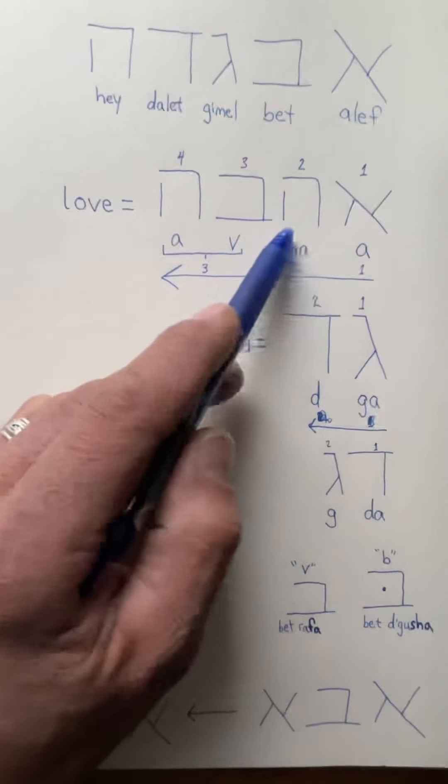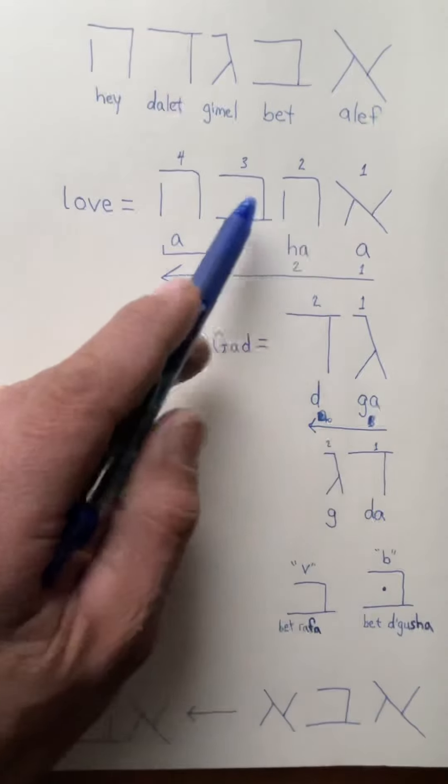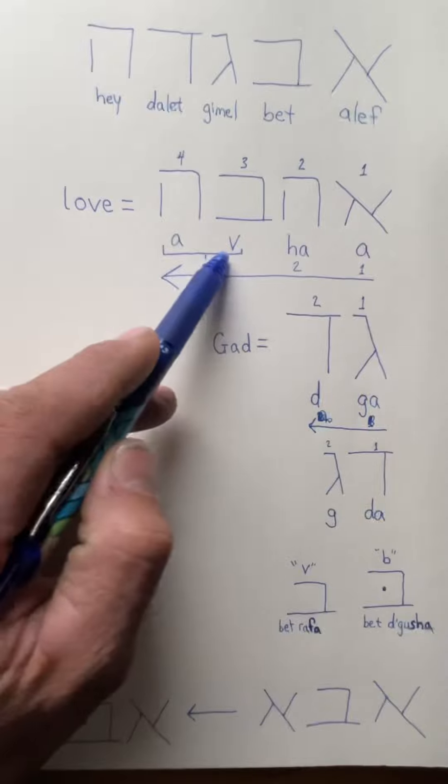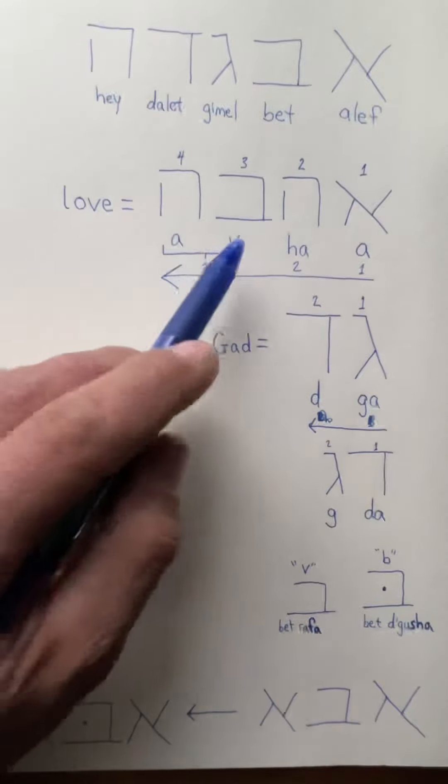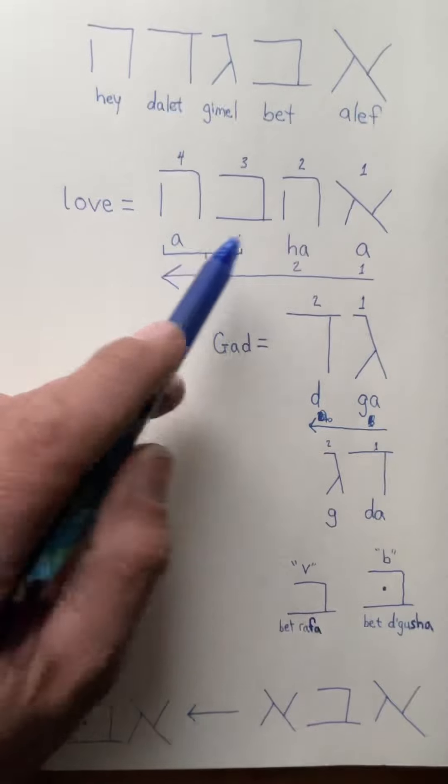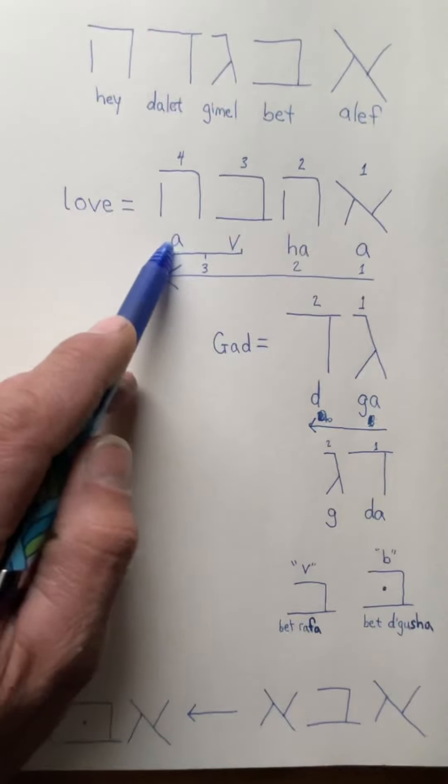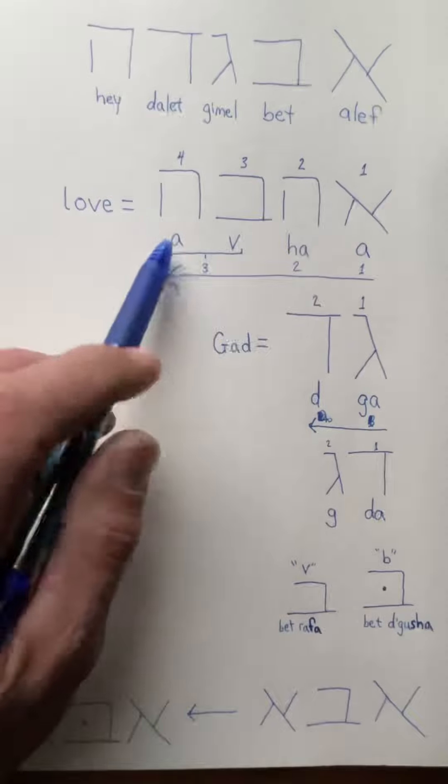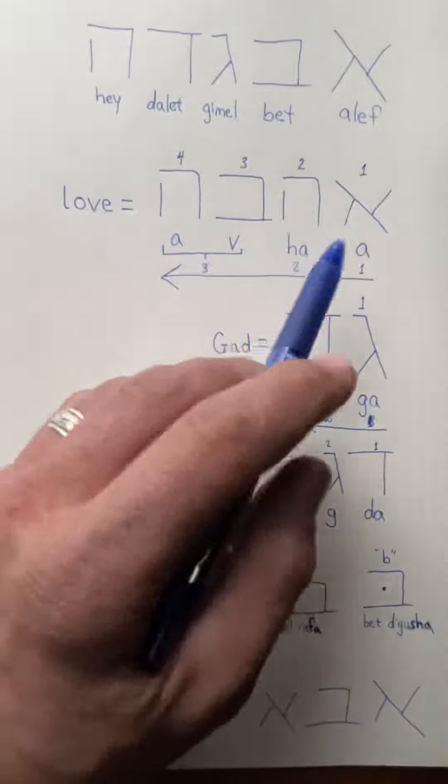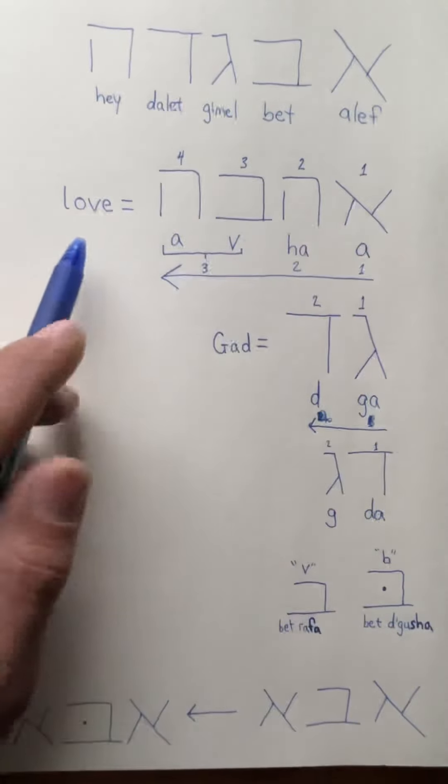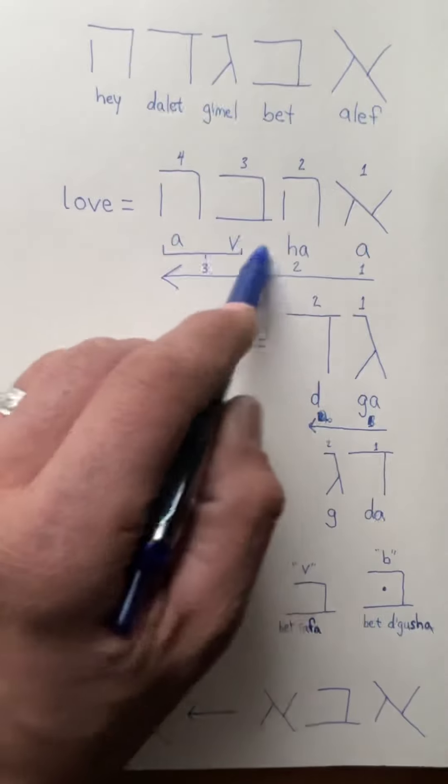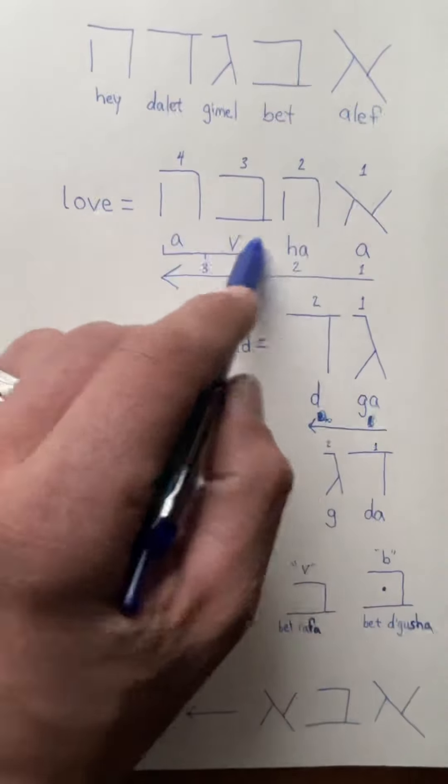This hey is pronounced 'ha', the bet is pronounced with the V sound as in V for Victor. The last hey is pronounced 'ah', so not 'ha', just 'ah'. So here we have ahava - ahava. This is the word love, and it contains in it the word 'hav'.